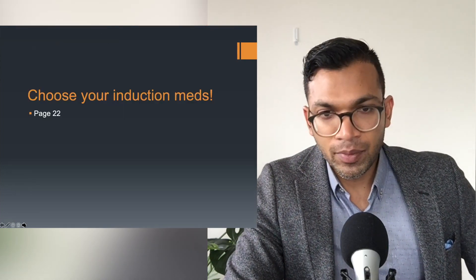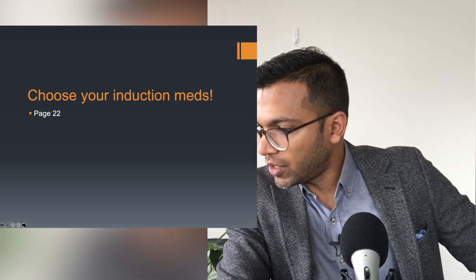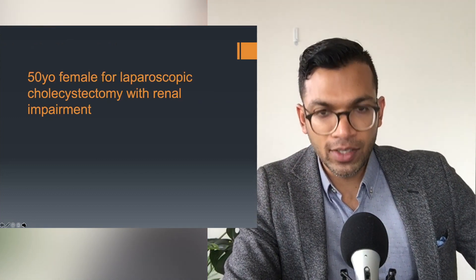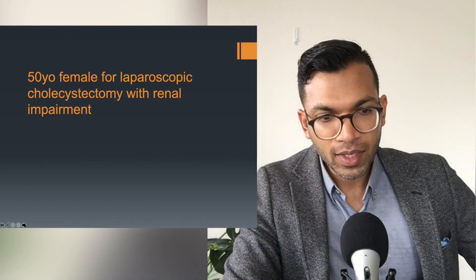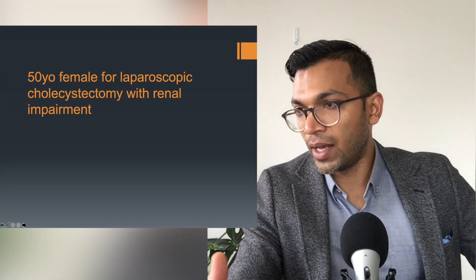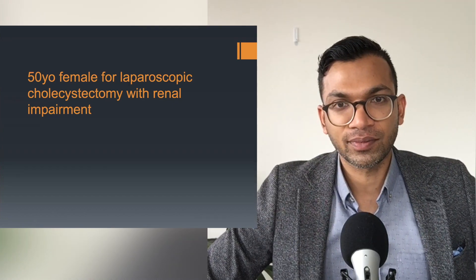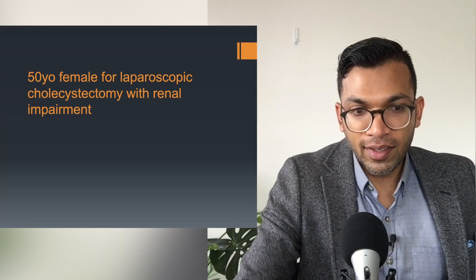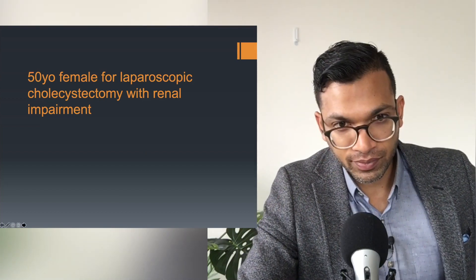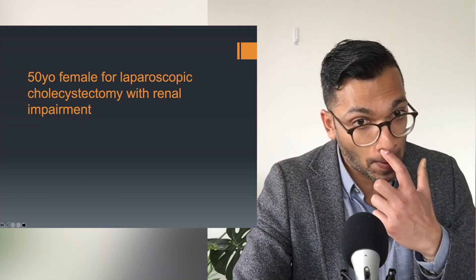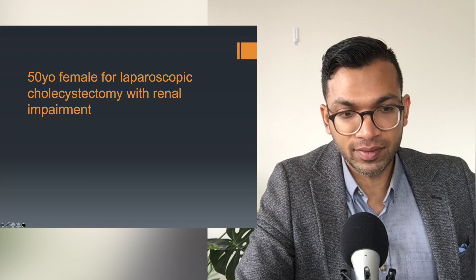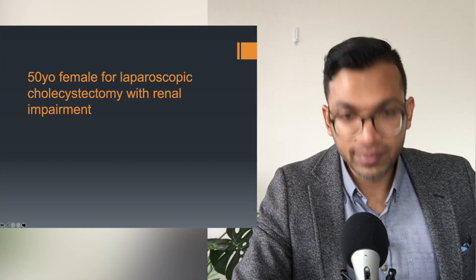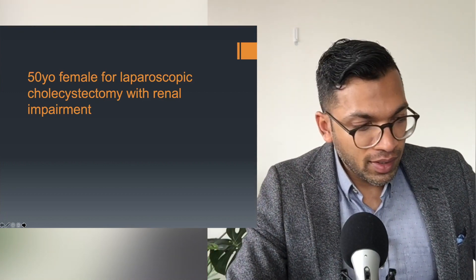Page 22: choose your induction meds. Choose your hypnotic, analgesic, and muscle paralytic agent for these cases. First case: a 50-year-old female for laparoscopic cholecystectomy with renal impairment. Student answer: propofol, fentanyl, rocuronium. Why choose rocuronium despite renal impairment? Because suxamethonium would be the other relaxant to consider, but the side effects — particularly the high potassium risk and high anaphylaxis rate — are probably worse for someone with renal impairment.